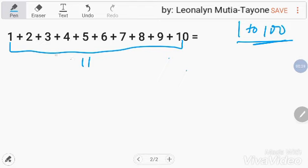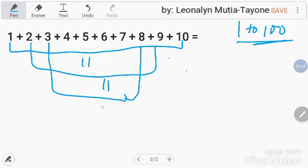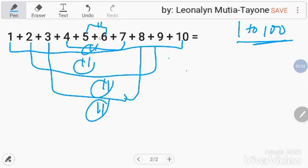Ito, 1 plus 10, that is 11. 2 plus 9, that is 11. 3 plus 8, that is 11 also. Itong dalawa, 11 din. At itong dalawa ay 11. Ilang 11 na tayo? 1, 2, 3, 4, 5. 5 times 11, and that is 55. So, ang answer dyan, 55.